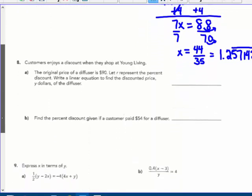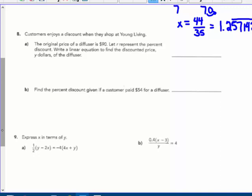I'm also going to do number 8 here. Customers enjoy a discount when they shop at Young Living. The original price of a diffuser is $90. Let R represent the percent discount, so 10% off or 20% off or 30% off. Write a linear equation to find the discounted price Y dollars of the diffuser. Well, I don't know what the percent off is, so I'm just going to use R to represent that percent of discount. To find that price, I would take my $90 and multiply it by the percent of discount, which you take from 100%, which is 1, and then subtract that discount. Say it's 20%, you would say 1 minus 0.2, but here I don't know what it is, it's just represented by R. So that is the equation that represents the discounted price at any discount R: Y = 90(1 - R).